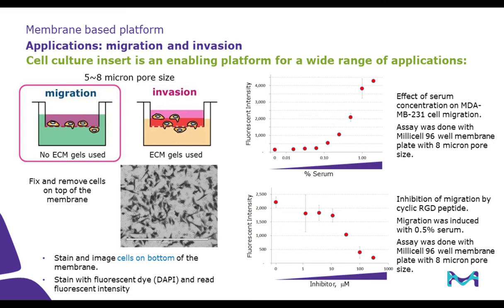Here are some example data generated using 96-well Millicell plates with 8.0-micron pore size. Plots on the right side of the slide show fluorescent intensity of cells from the bottom side of the membrane after migration assay. For both plots, cellular fluorescence is plotted on the y-axis. The plot on the upper right shows the effect of serum concentration on cellular migration, with concentrations indicated on the x-axis. The plot on the lower right shows the inhibitory effect of RGD peptide on cellular migration induced by 0.5% serum, with inhibitor concentrations indicated on the x-axis.